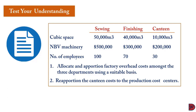We have three departments: sewing, finishing, and canteen. For cubic space, sewing occupies 50,000 square meters, finishing 40,000, and canteen 10,000. For net book value of machinery, sewing is $500,000, finishing $300,000, and canteen $200,000.